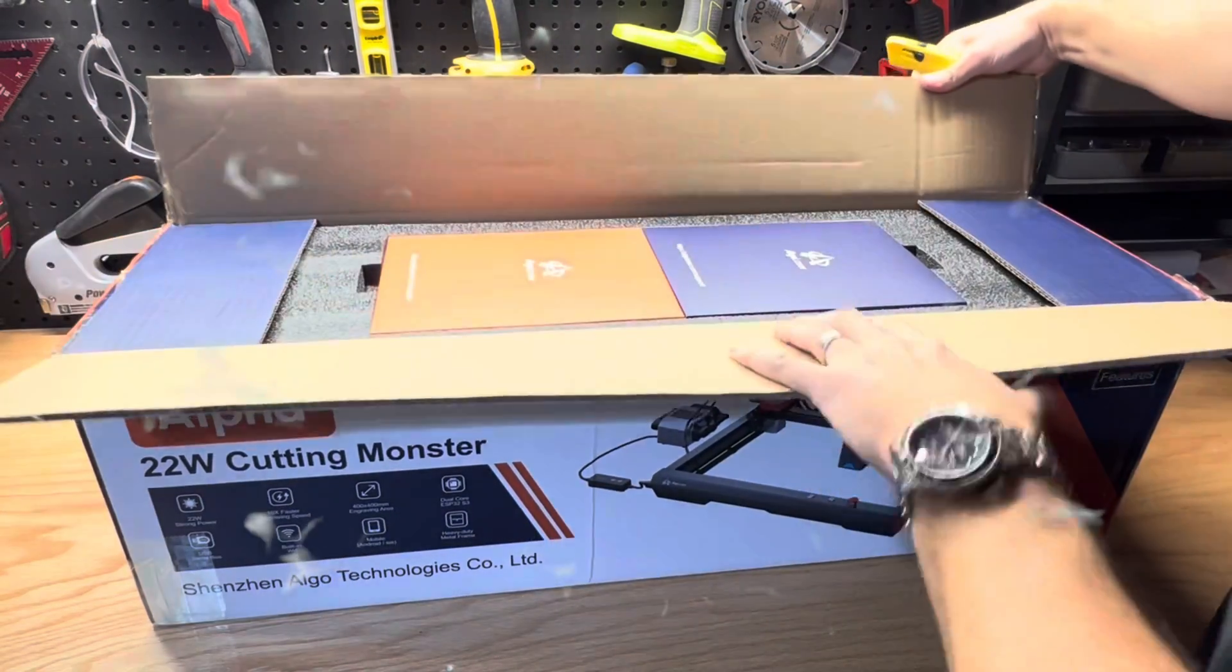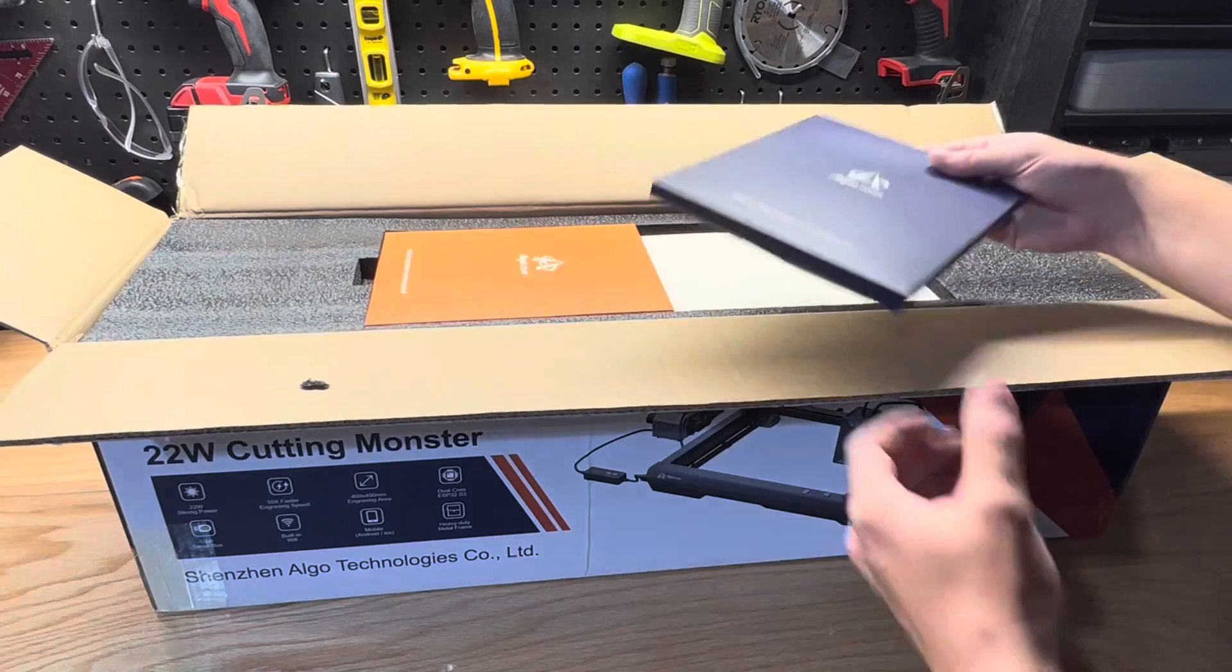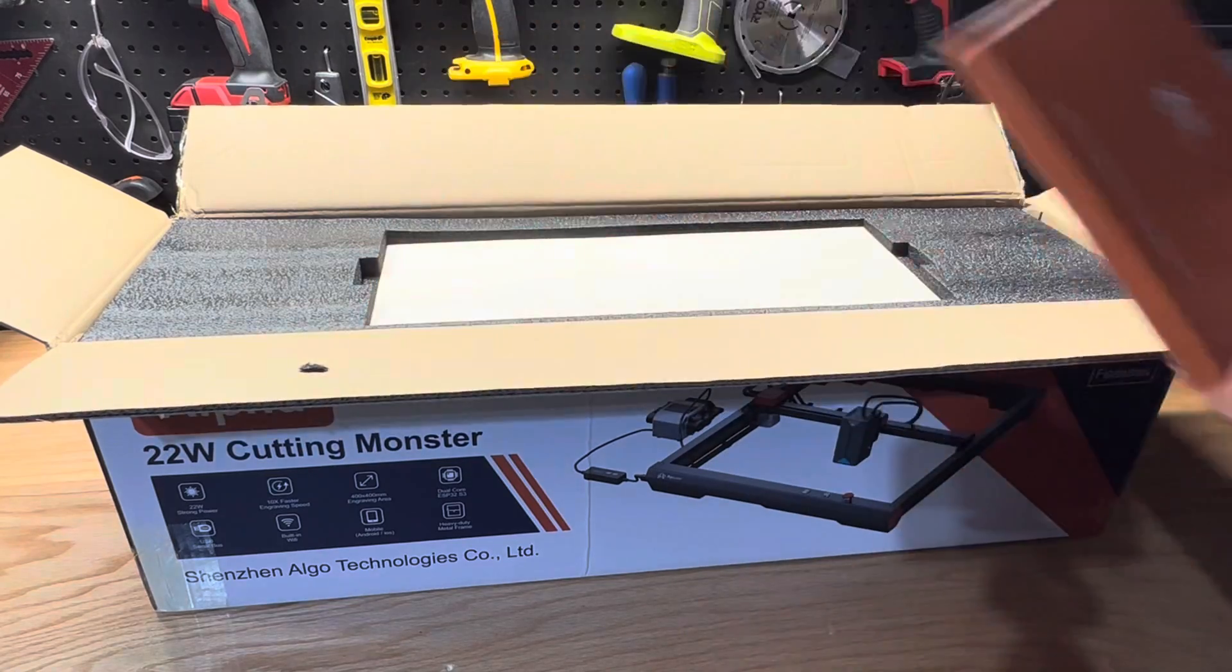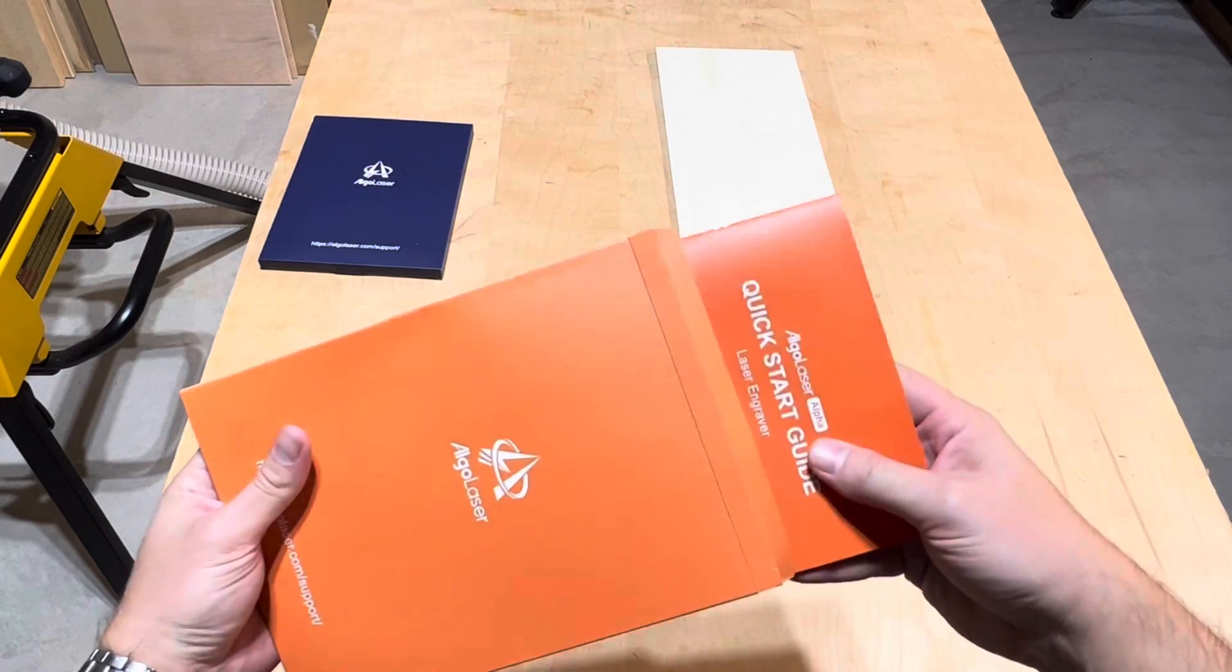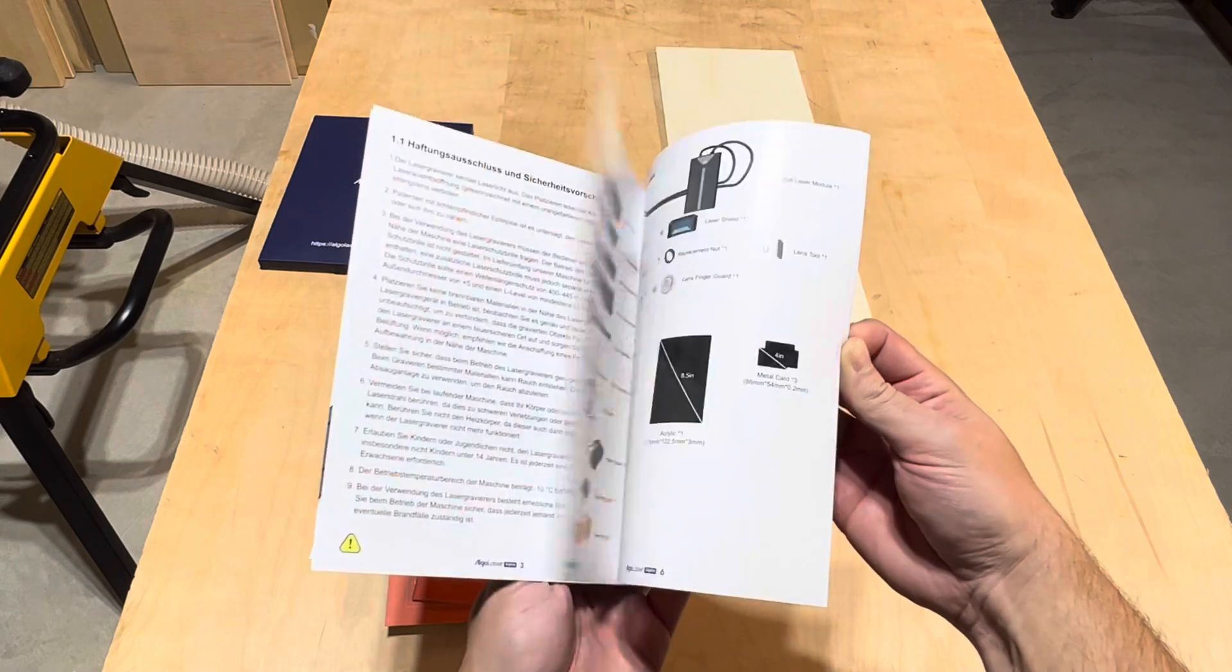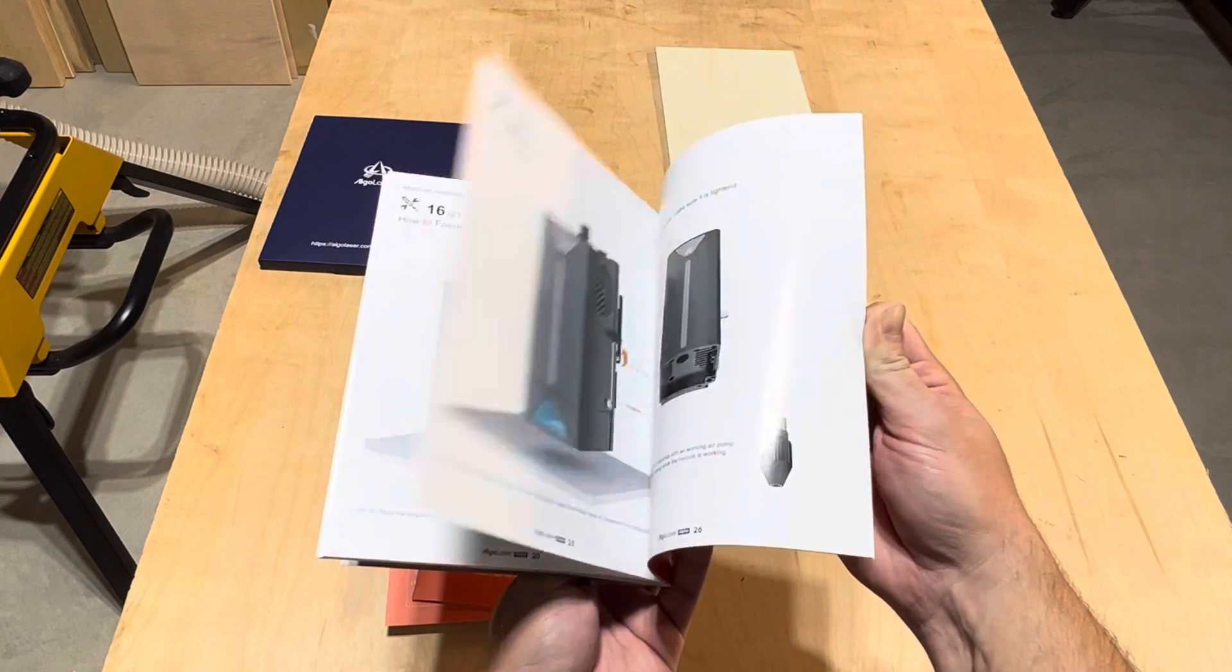The Algo Laser is very well packaged with sufficient packaging material. Included in the top tray is a user manual and sample materials. The instructions are well documented and have clear colored images to reference for assembly.